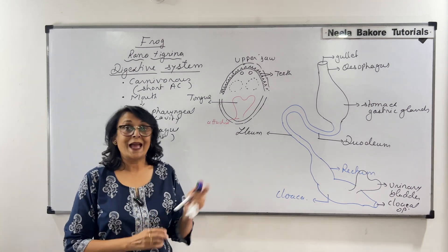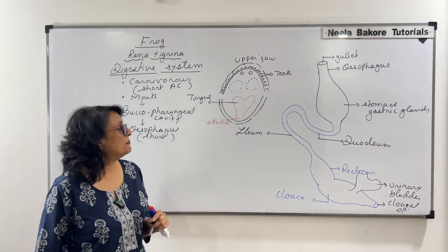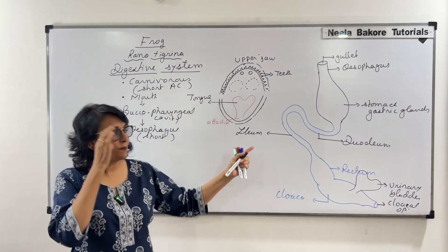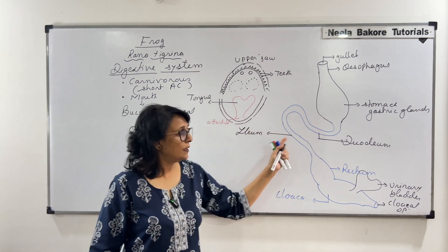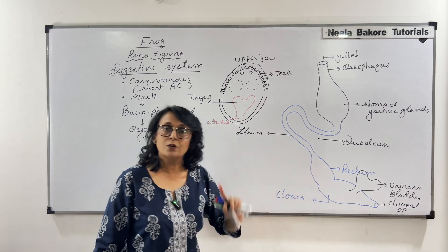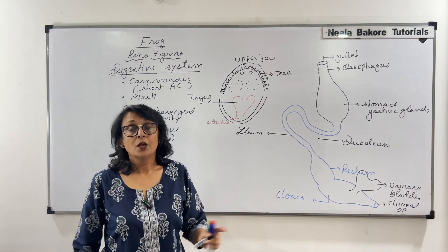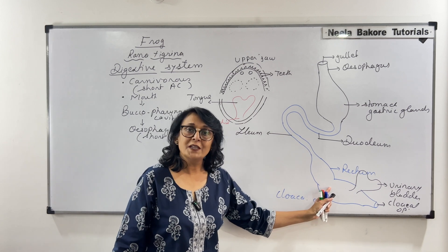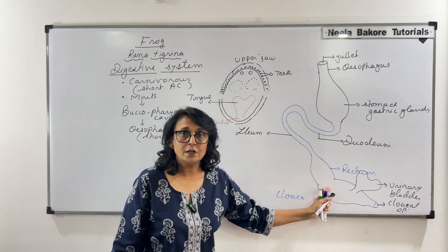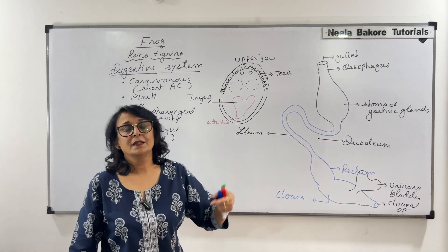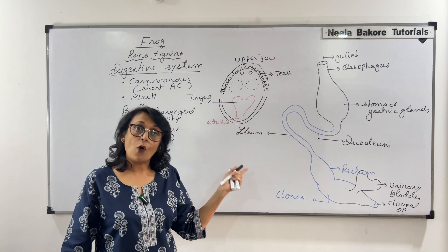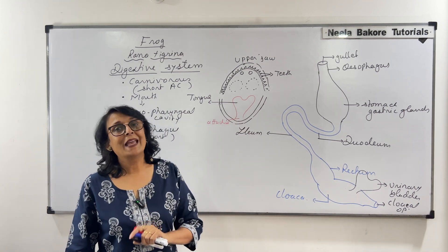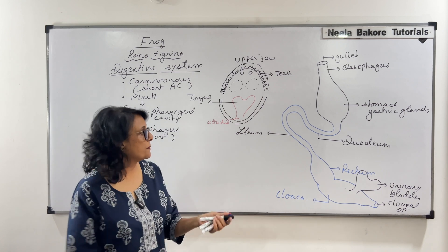The cloaca is a characteristic feature of amphibians. The digestive system has mainly these parts: stomach, then duodenum, ileum, and then rectum. Rectum opens into the cloaca. The cloaca receives three things: undigested food from the digestive system, excretory material such as urine from the kidneys, and gametes from the reproductive system.